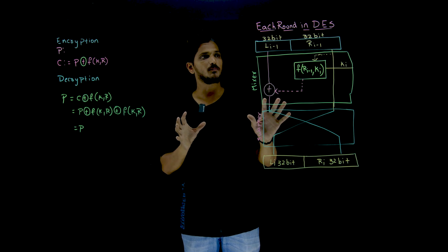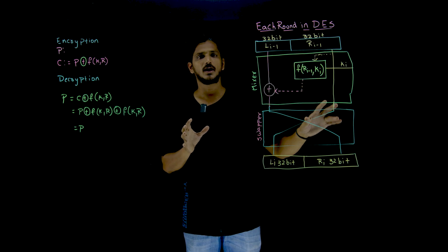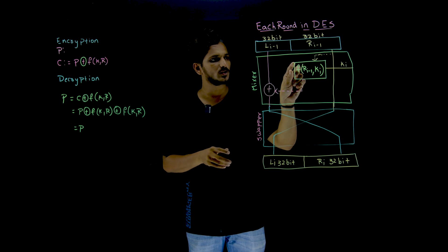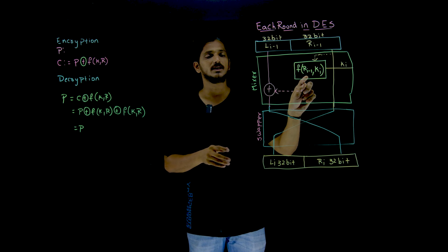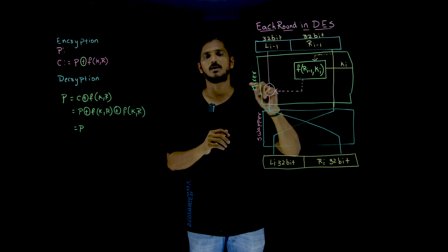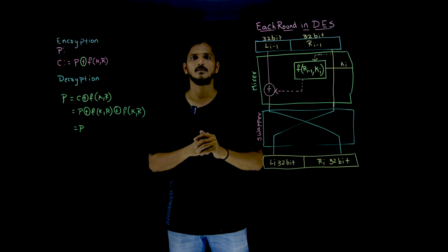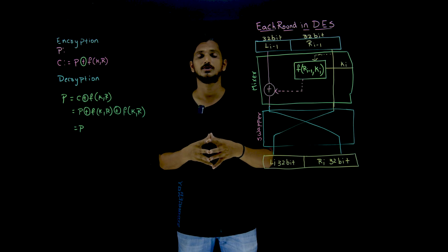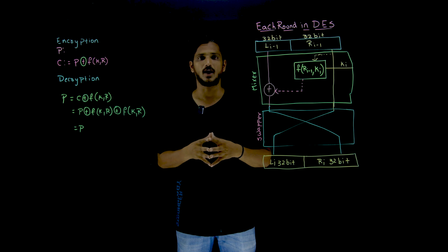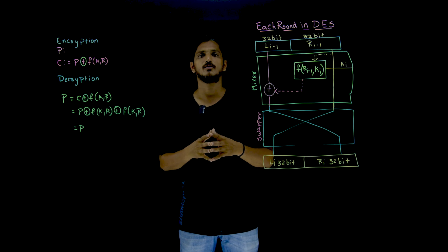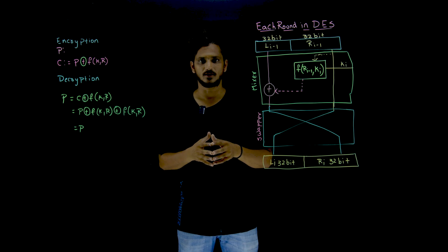Hope you got clarity on what happens in a round in DES. In our next class, we are going to understand what happens inside the function F of R(i-1) and Ki. If you have any questions regarding the concept, please post your questions in the comment section below. If you have not subscribed to our channel, please subscribe and press the bell icon for the latest updates. Thank you.